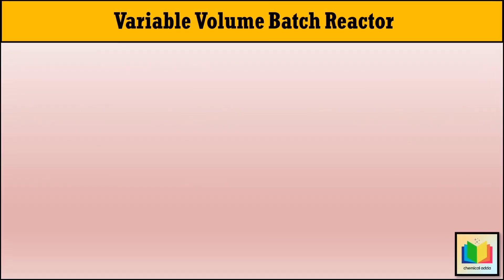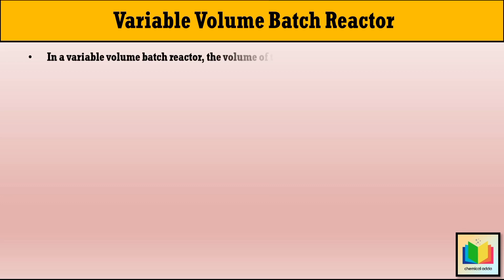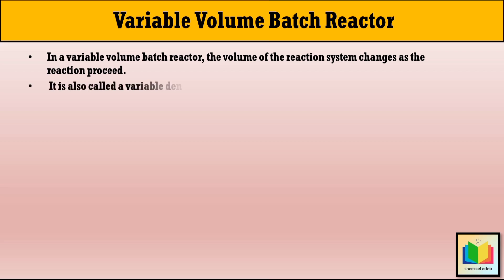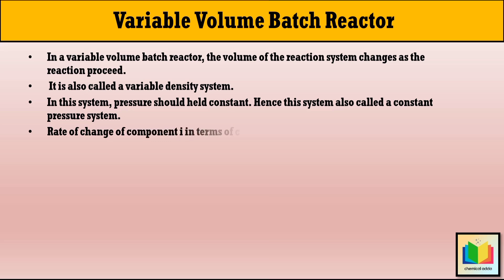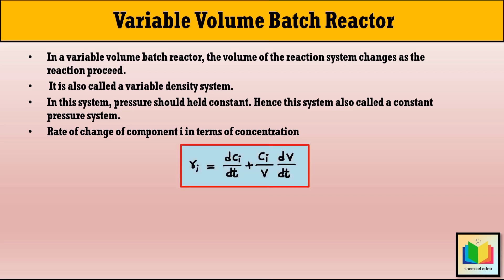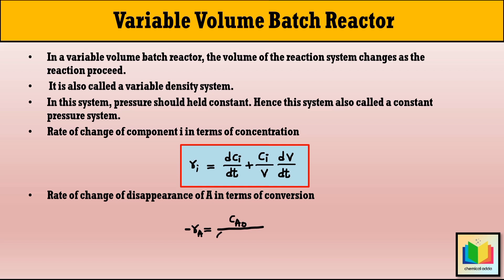Let's summarize this topic. In a variable volume batch reactor, the volume of the reaction system changes as the reaction proceeds. It is also called a variable density system, and pressure is held constant — hence it is also called a constant pressure system. The rate of change of component I in terms of concentration is: RI = dCI/dt + (CI/V) × dV/dt. The rate of disappearance of reactant A in terms of conversion is: −rA = [CA0 / (1 + εA·XA)] × dXA/dt.